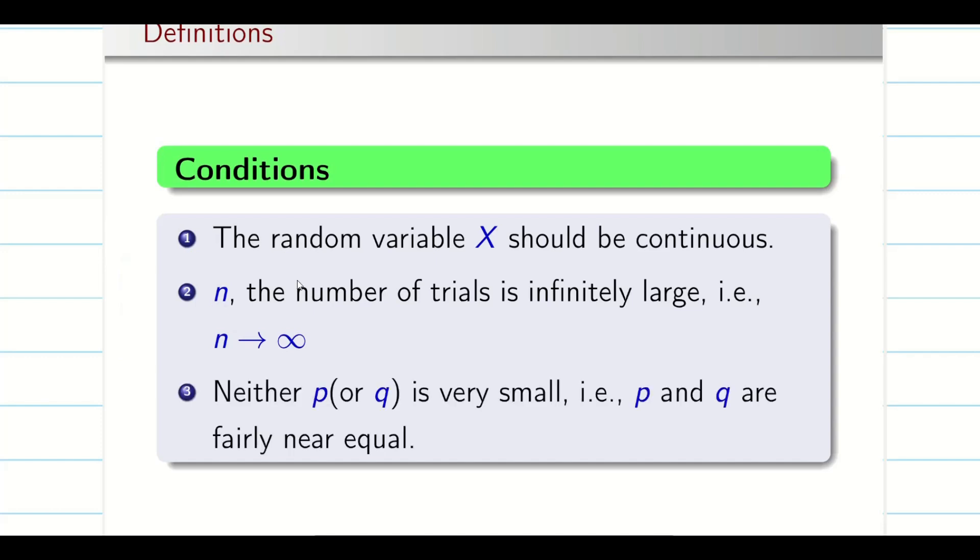Then second one, here, in Poisson, do you remember, the success would be very, very low. But in the case of normal distribution, neither P or Q should be very small. They should be fairly equal. So might be 50-50 or they are very close to 50-50. If this condition holds, then I can define what? Normal distribution.